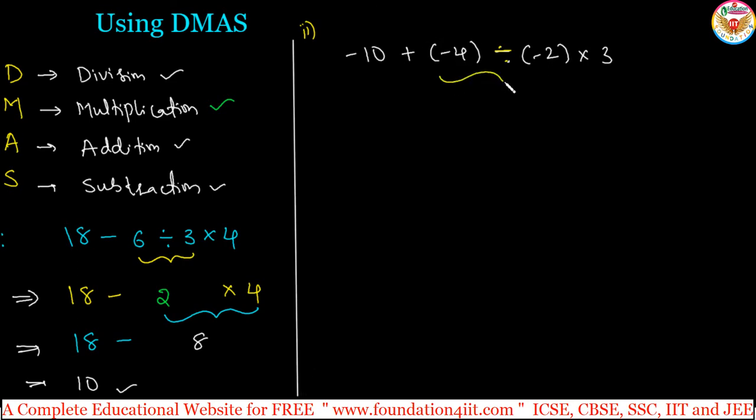First, we need to solve this part, minus 4 divided by minus 2. Negative number divided by negative number is positive. 4 divided by 2 is 2, the answer is 2 for this. Remaining is minus 10 plus into 3 as it is.